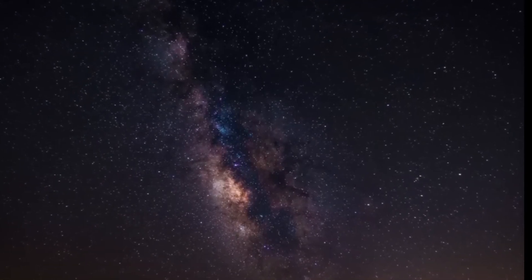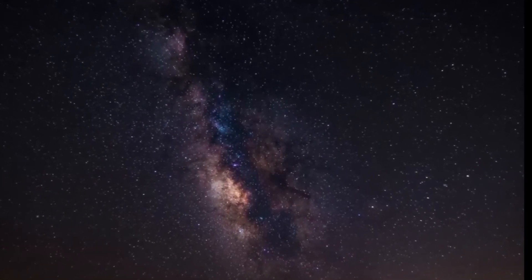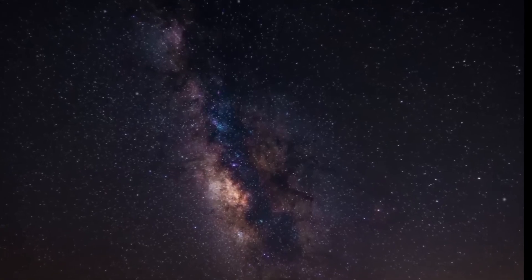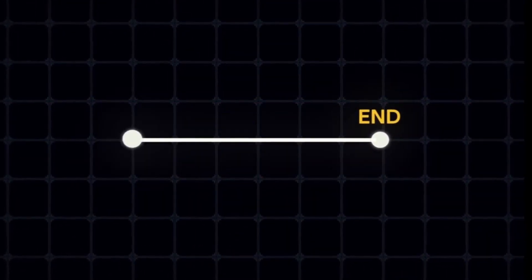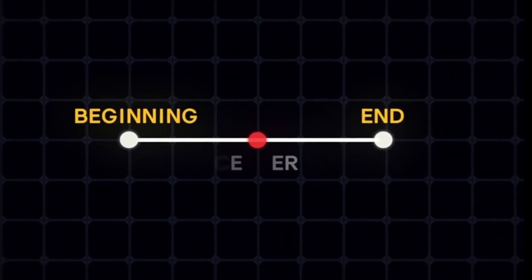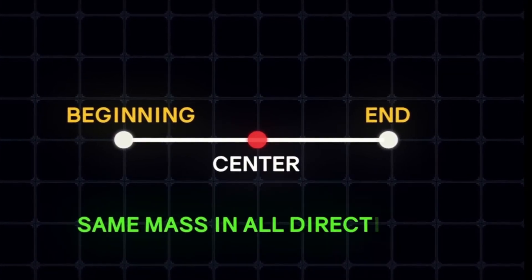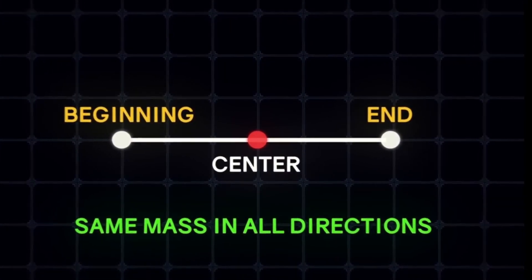But it seems that the universe has no such point. All our observations show that unlike stars, planets, and galaxies, it doesn't rotate. And this means it's impossible to find its center in a conventional way. But maybe we can find it by mass. If an object has an end, it has to have a beginning. And its center would be a point that, on average, has the same mass in all directions.